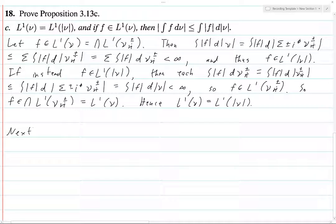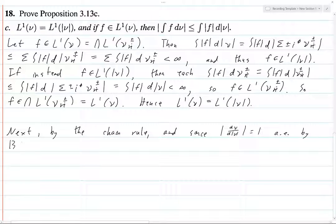So now we want to prove this inequality. Next, by the chain rule, and since dν/d|ν| is equal to 1 almost everywhere by 13b, we have—that's just something that we proved in proposition 13b. So anyways, integral of F dν, well this is just integral of F, and then we write dν/d|ν|, and this is the chain rule.